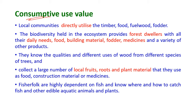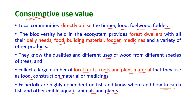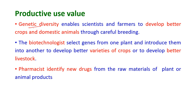Value of Biodiversity — Consumptive Use Value: Local communities directly utilize timber, food, fuel wood, and fodder. Biodiversity held in ecosystems provides forest dwellers with all their daily needs: food, building materials, fodder, medicines, and a variety of other products. These people know the qualities and different uses of food from different species of trees, and they collect local fruits, roots, and plant materials for food, consumption, and medicines. Fisher folk are highly dependent on fish and know how to catch fish and other edible aquatic animals and plants.